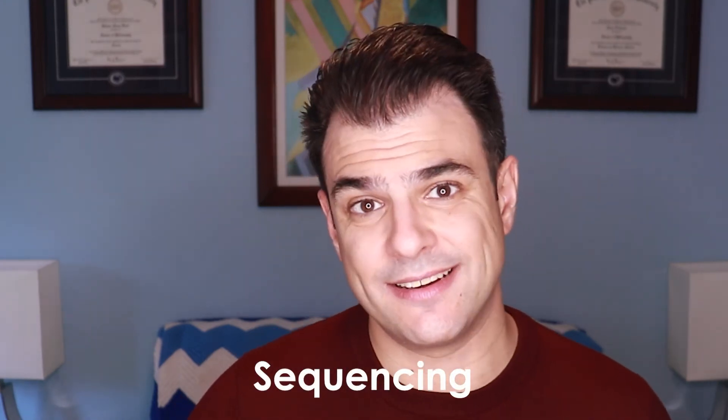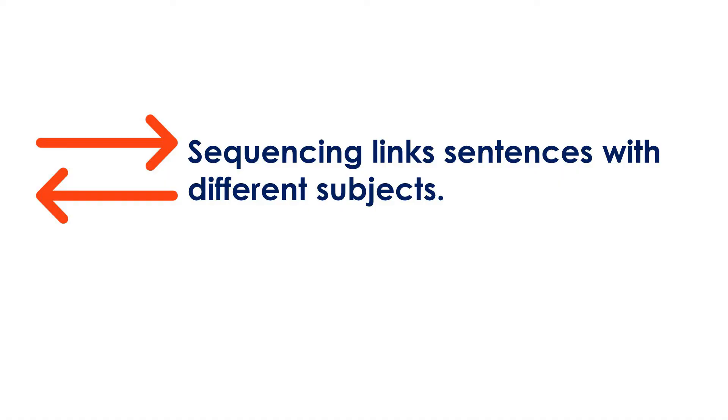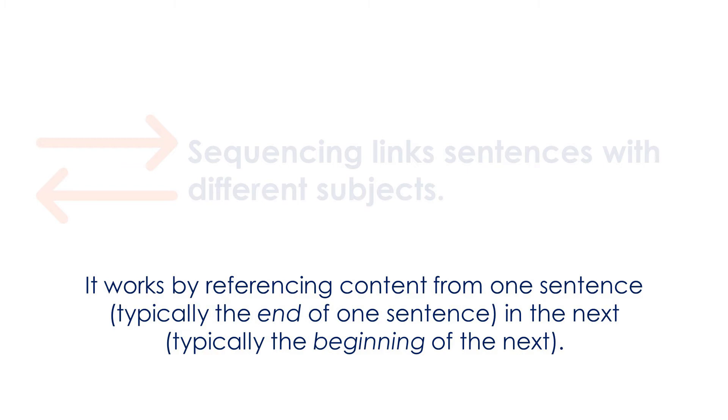Now let's look at our second continuity technique: sequencing. Sequencing is what we use to link sentences with different subjects. It works by referencing content from one sentence — typically the end of one sentence — in the next sentence, typically the beginning of the next sentence. I oftentimes think about sequencing like links in a chain, where you've got the end of one link overlapping with the beginning of the next, and that's how you create those connections. So let's look at an example of sequencing, beginning with a paragraph that fails to take advantage of sequencing.